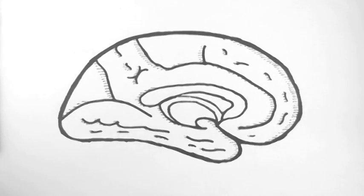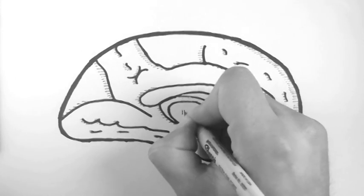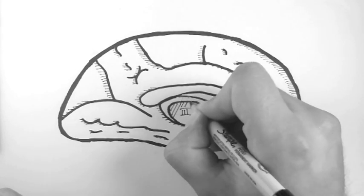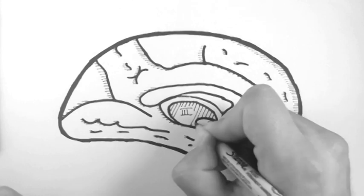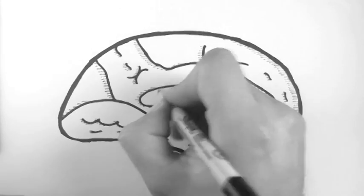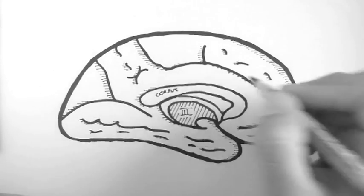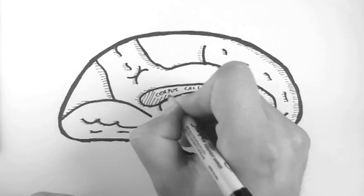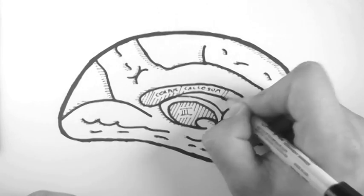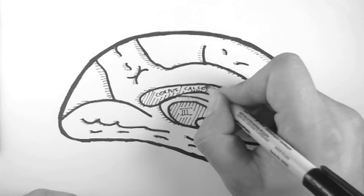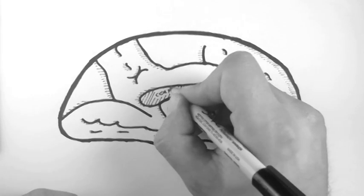So I'll start by labeling the third ventricle, that's this space in the middle, and it would be filled with cerebral spinal fluid, or CSF. Then this big area up here is a big bit of white matter called the corpus callosum, and it's the main white matter tract that connects the two hemispheres of the brain together.